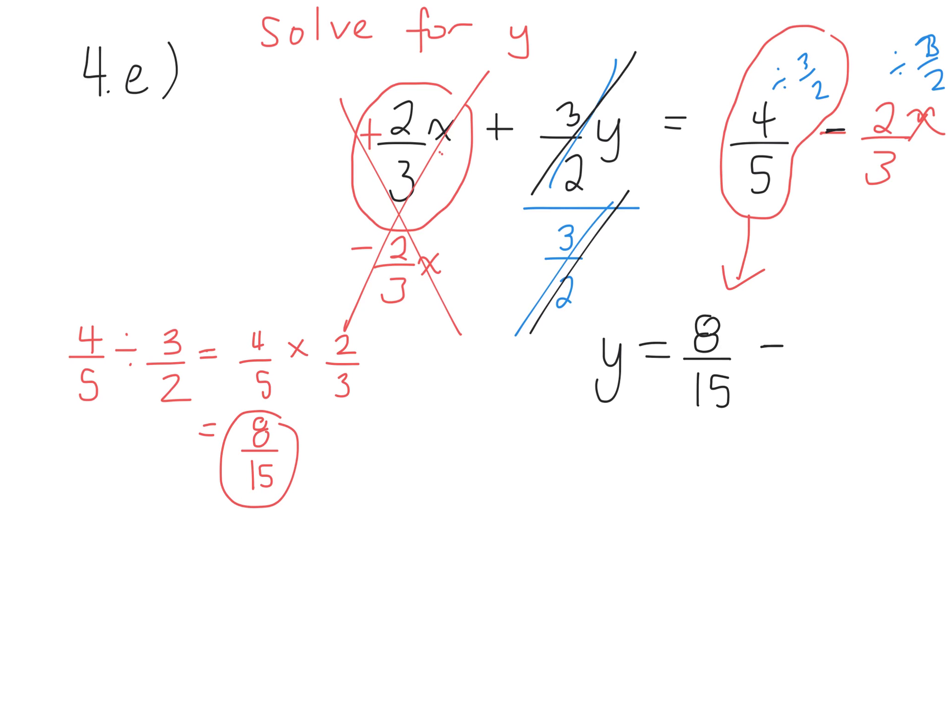Take away, because we have subtraction. Who wants to tell me how they got the second term? So the second term is 2 over 3. Let's just leave the x right now. Divided by 3 over 2. Yes, Abby.